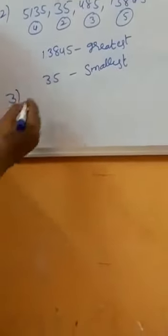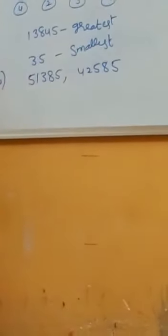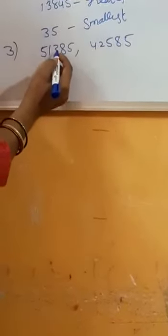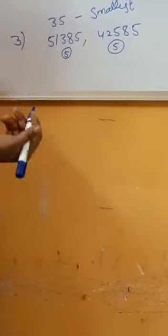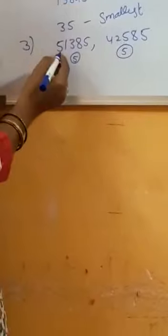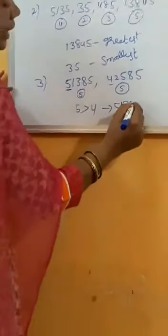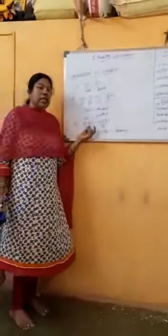Take another example. How can you say which one is greatest and which one is smallest? Here also we count the digits first. Both numbers have 5 digits. So we check the place value. In the 10,000 place, one number has 5 and the other has 4. Since 5 is greater than 4, the number 51385 is the greatest number.